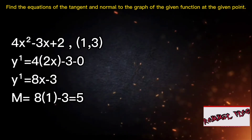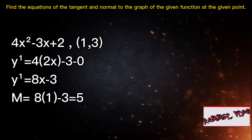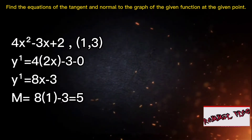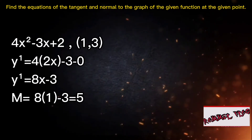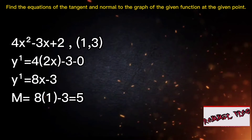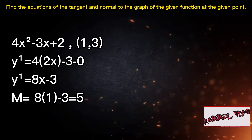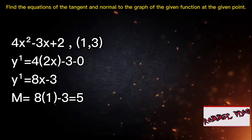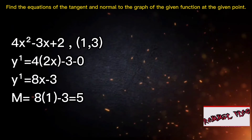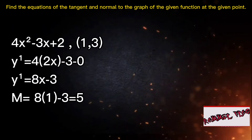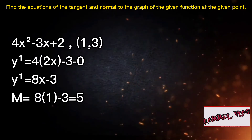To derive this function, we subtract 1 from its exponent and take the exponent beside the x. So it is 4 times 2x minus 3, and the constant becomes 0. The final derivative of 4x squared minus 3x plus 2 is 8x minus 3.